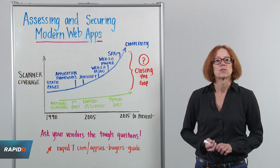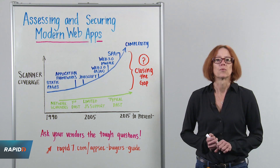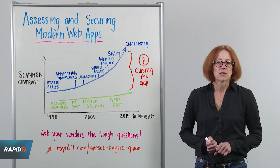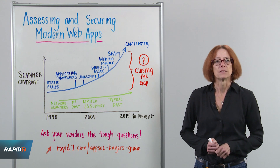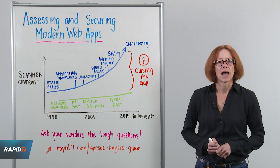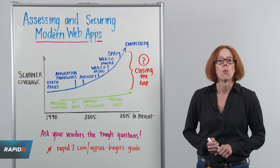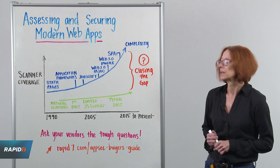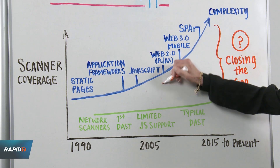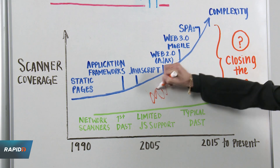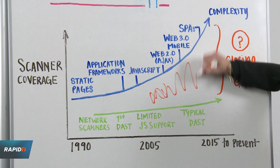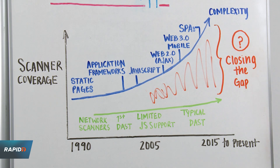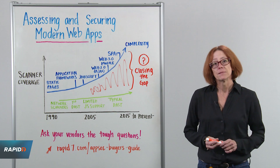We heard from security experts that dynamic scanner coverage has actually eroded in recent years and the gap in coverage is growing. So instead of their DAST scanners giving them accurate results to address potential risk, it's making them spend time figuring out why the application broke the scanner. Does this sound like you? Well, I have some advice.